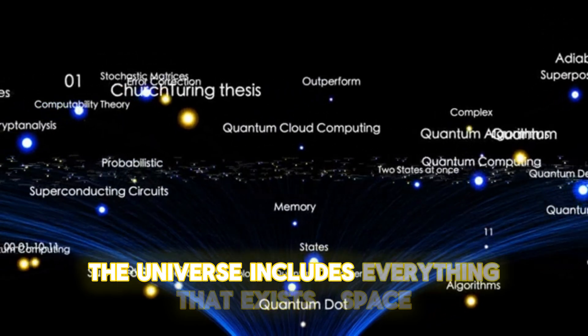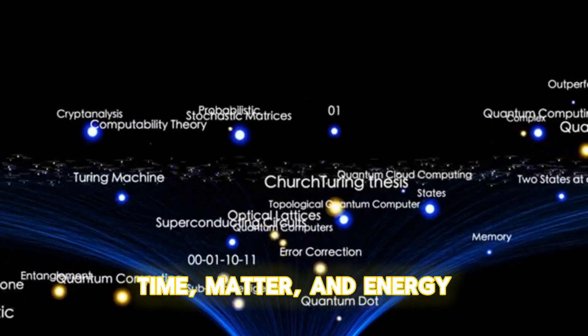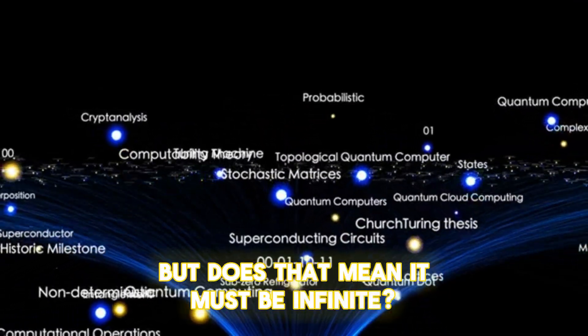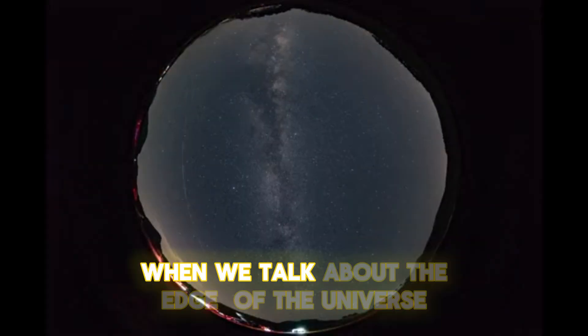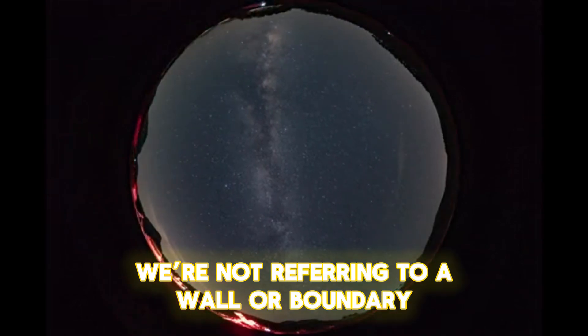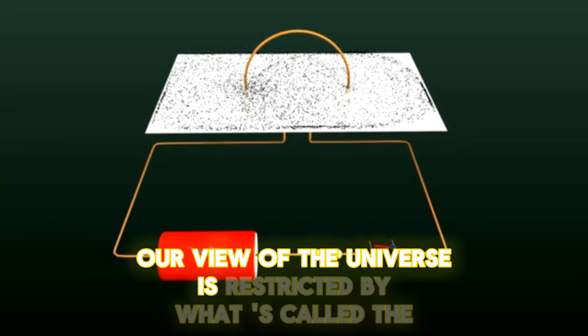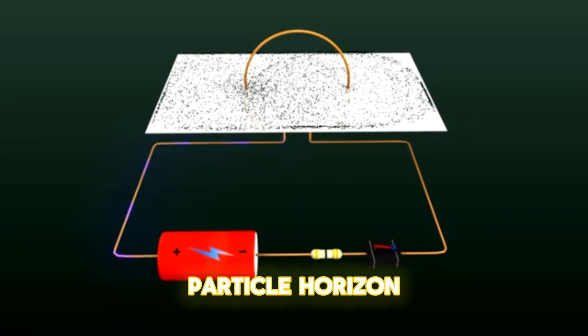The universe includes everything that exists: space, time, matter, and energy. But does that mean it must be infinite? Not necessarily. When we talk about the edge of the universe, we're not referring to a wall or boundary, but rather to the limits of what we can observe. Our view of the universe is restricted by what's called the particle horizon.